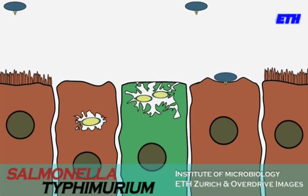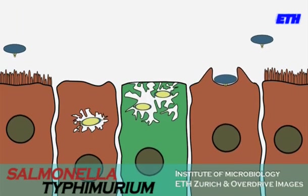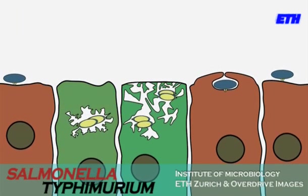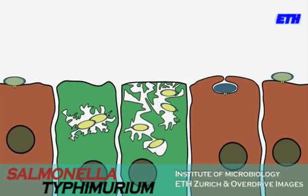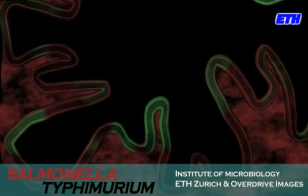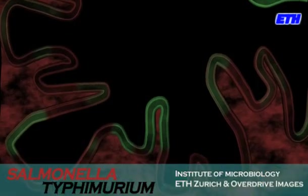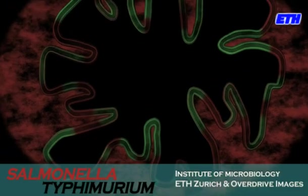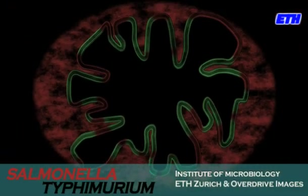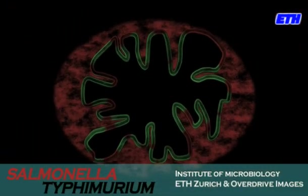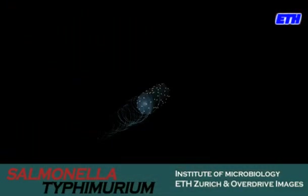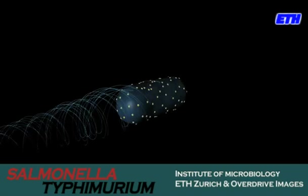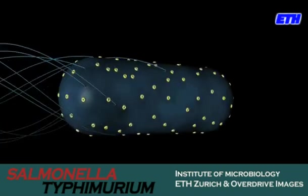Using type 3 secretion systems as molecular syringes to inject effectors into intestinal cells and manipulate signaling pathways, Salmonella establishes an infection in the gut and triggers a profound inflammatory response, leading to the typical symptoms of infection: abdominal pain and diarrhea. Much work is still needed to understand the different steps leading to disease.